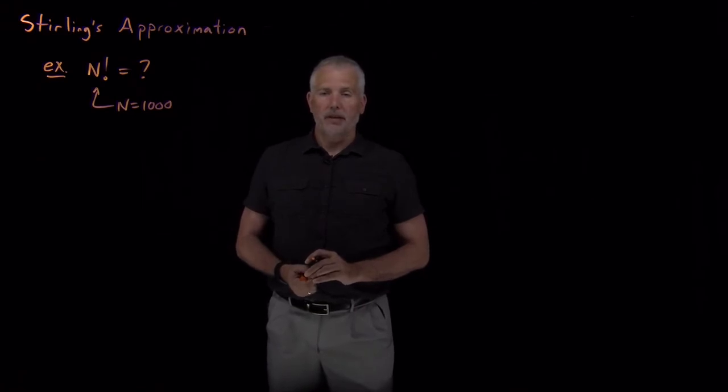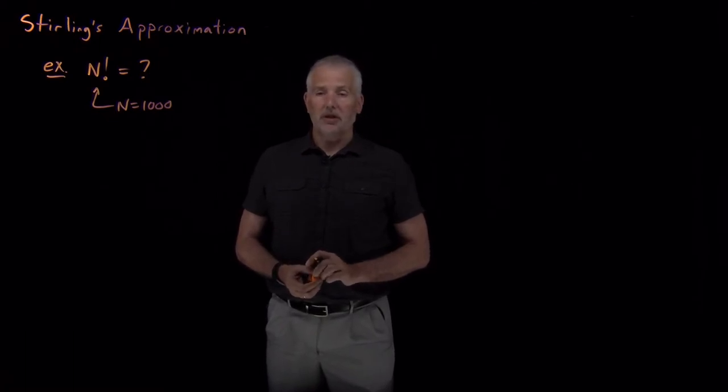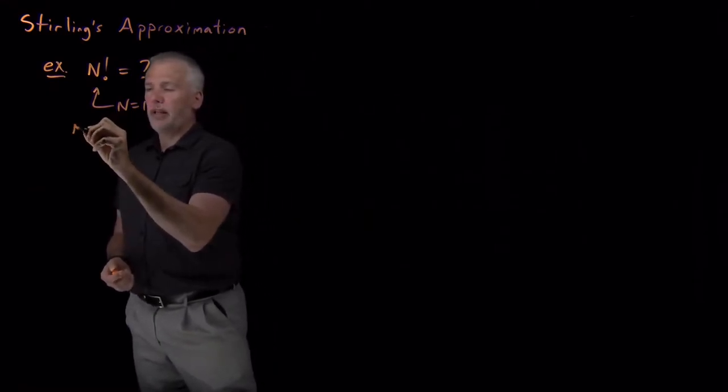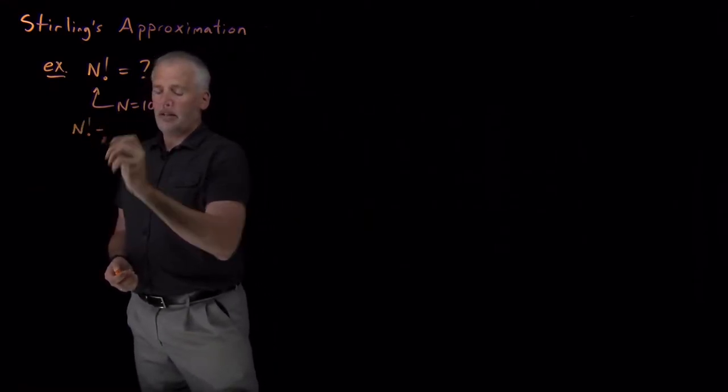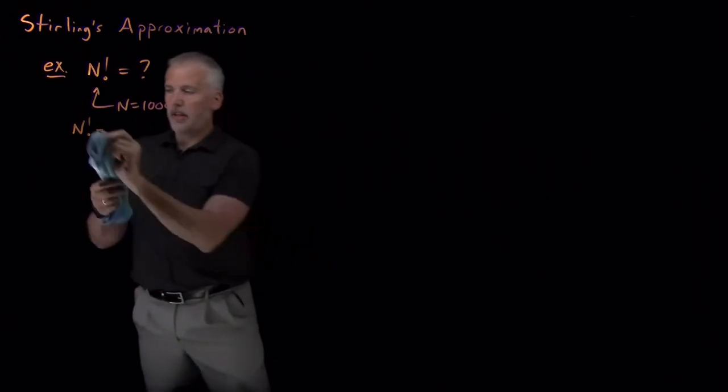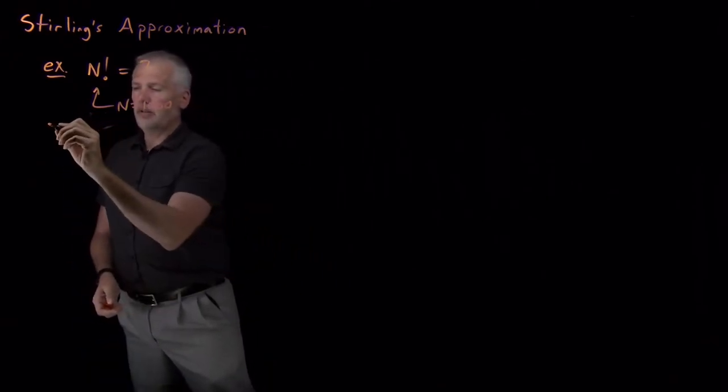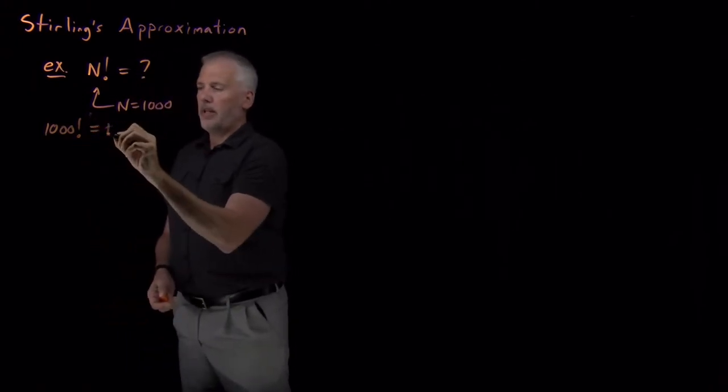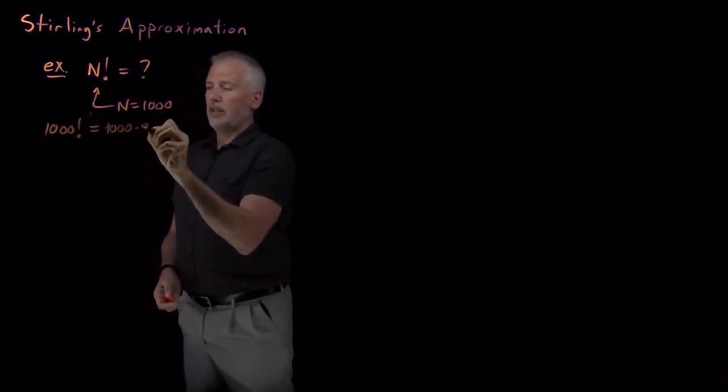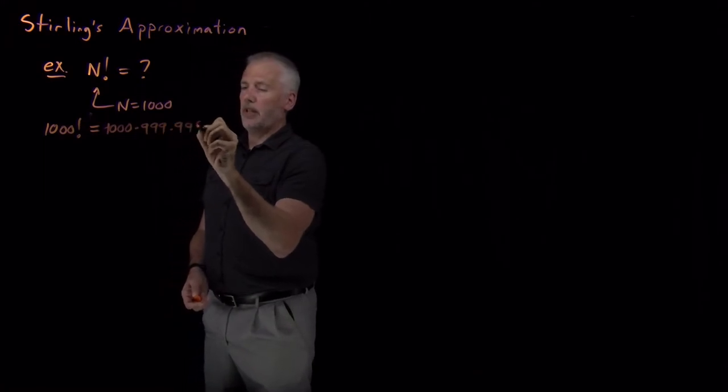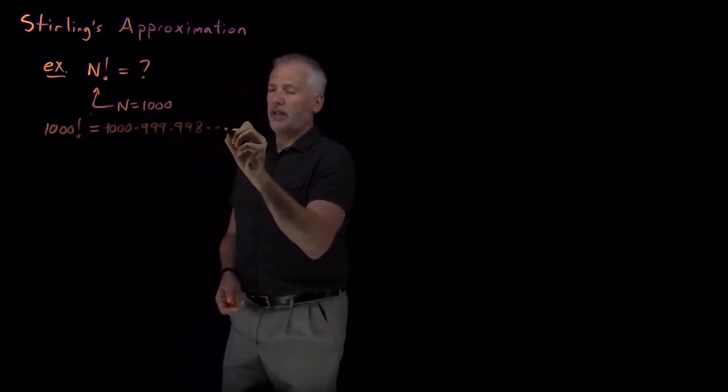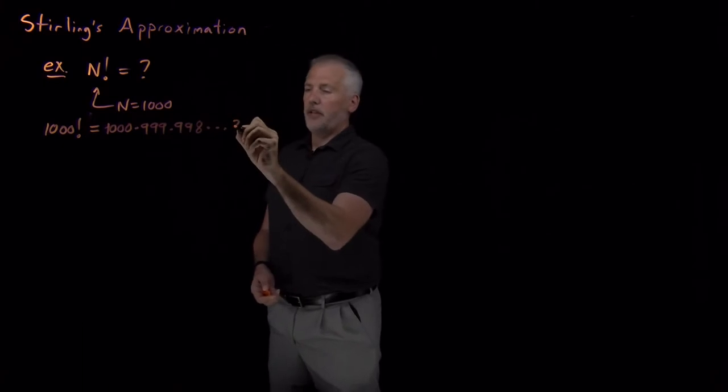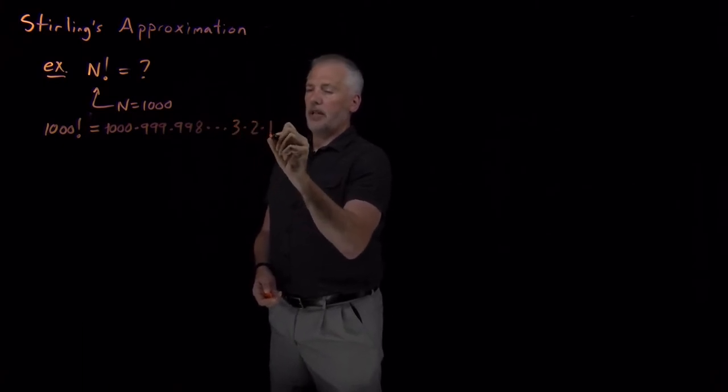If you've paused and come back, you've found that when you type 1,000 factorial into your calculator, you get an error. That number is so large that your calculator can't calculate it, can't display it. If I calculate 1,000 factorial, that means 1,000 times 999 times 998 and so on until I get down to 3, 2, 1.